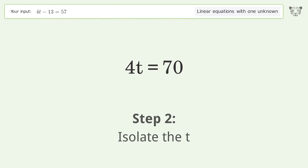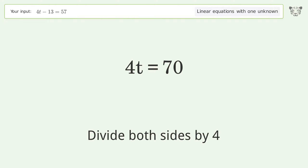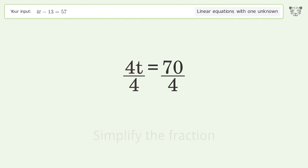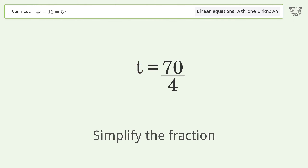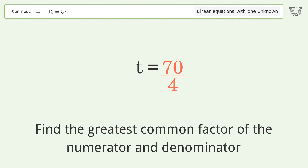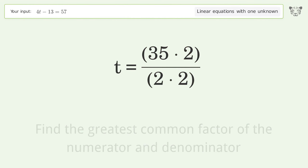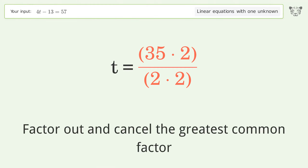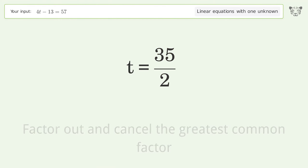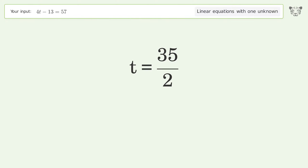Isolate the t: divide both sides by 4 and simplify the fraction. Find the greatest common factor of the numerator and denominator, then factor out and cancel the greatest common factor. And so the final result is t equals 35 over 2.